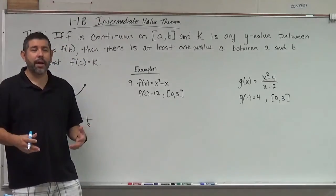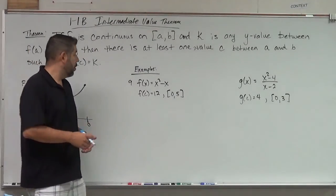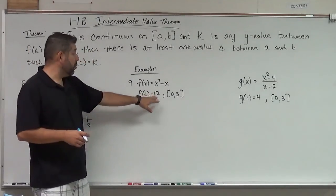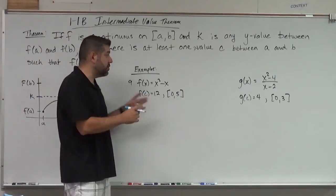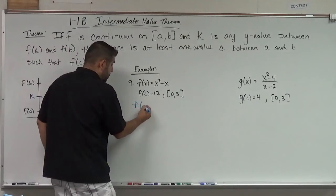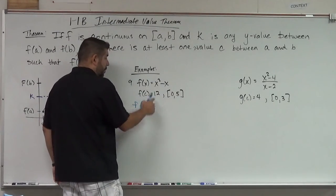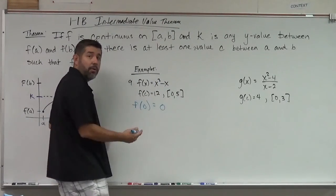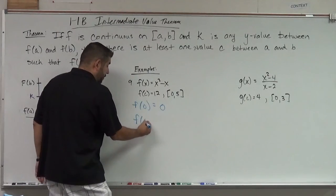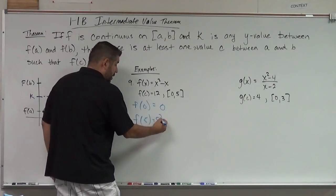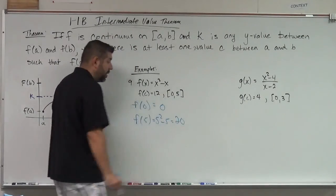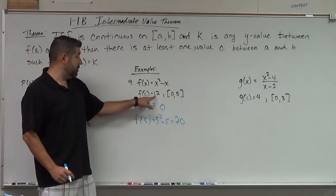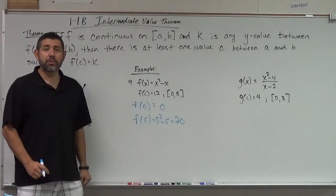is it continuous on 0 to 5? Sure is, x squared minus x is continuous everywhere. Okay, next thing is, is 12 between f(0) and f(5)? So I've got to figure that out. So f(0), I'm going to plug that in, and that's going to be 0. And f(5), I'm going to plug that in, and I'm going to get 25 minus 5 is 20.